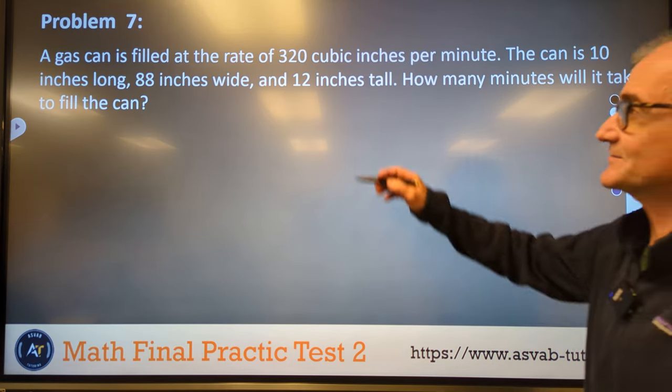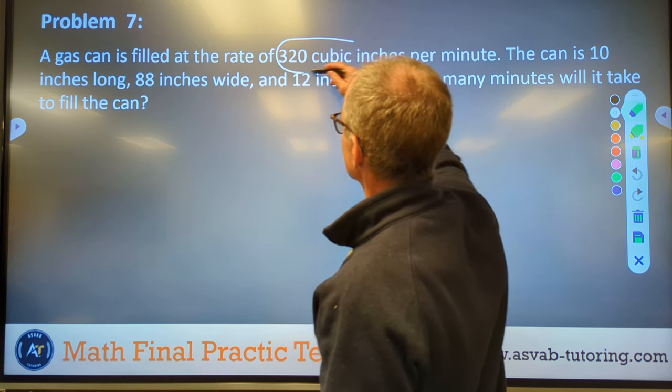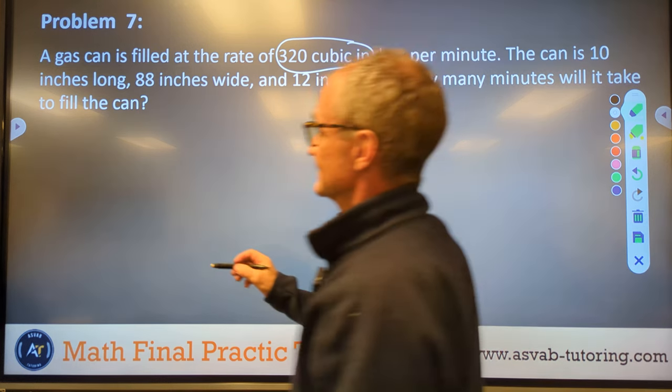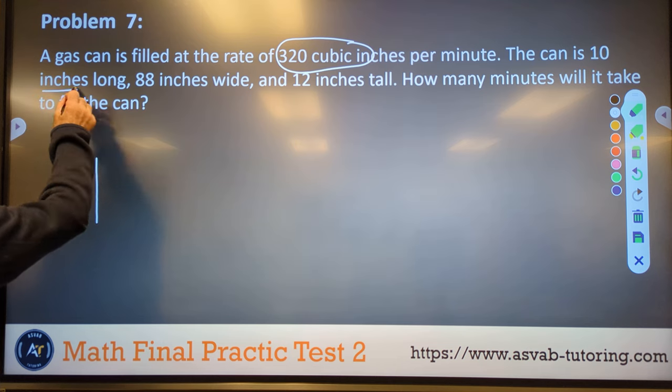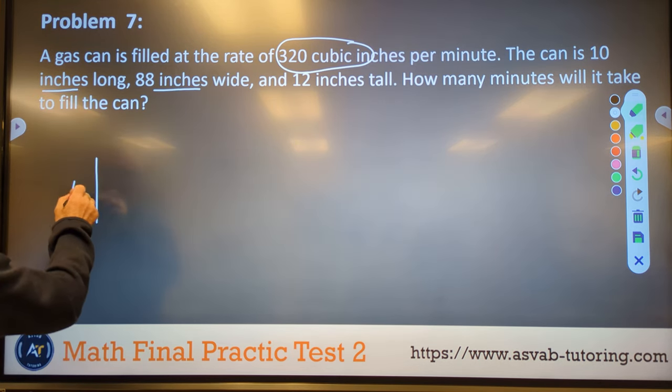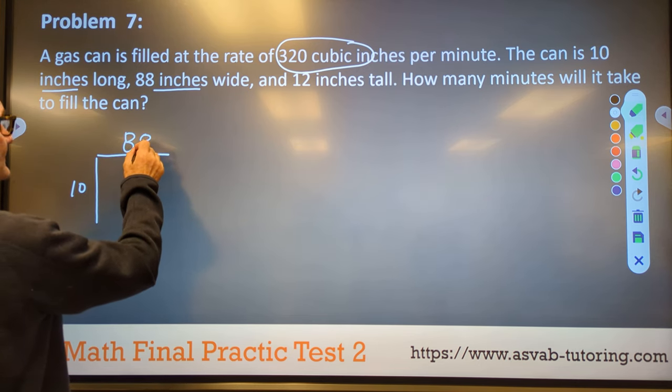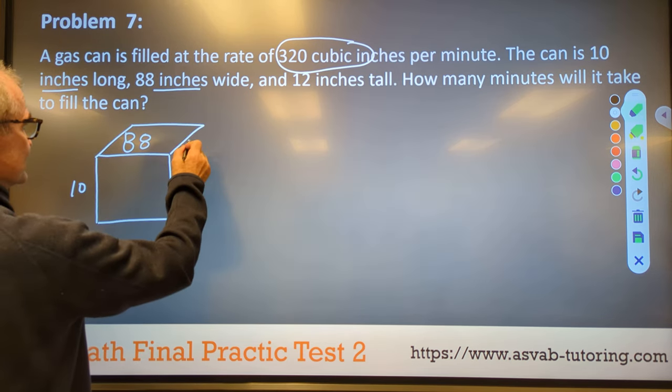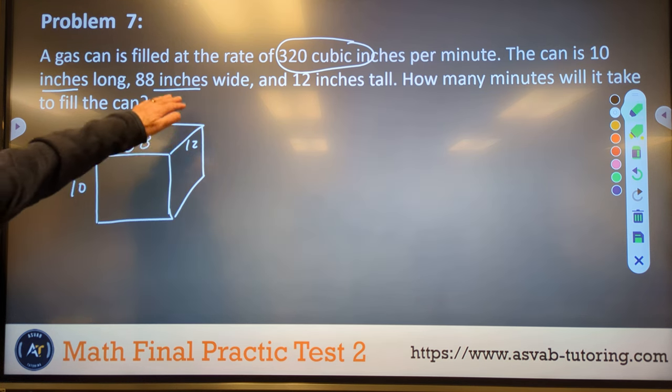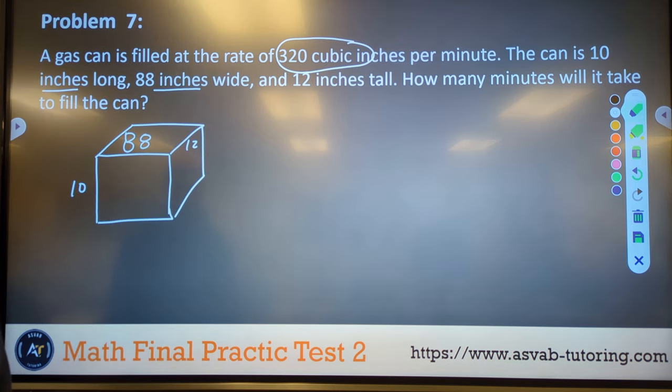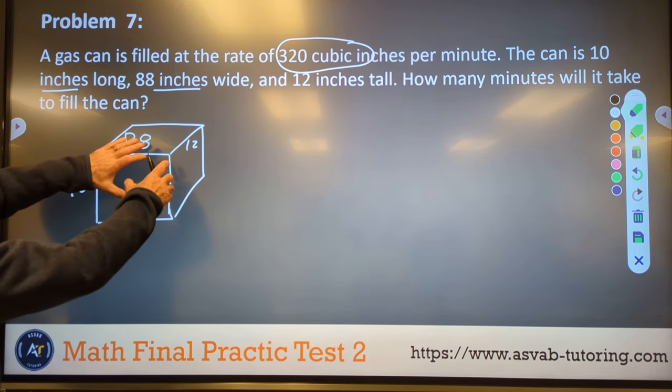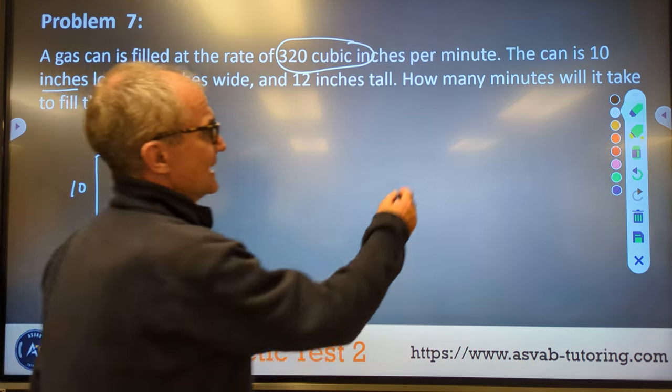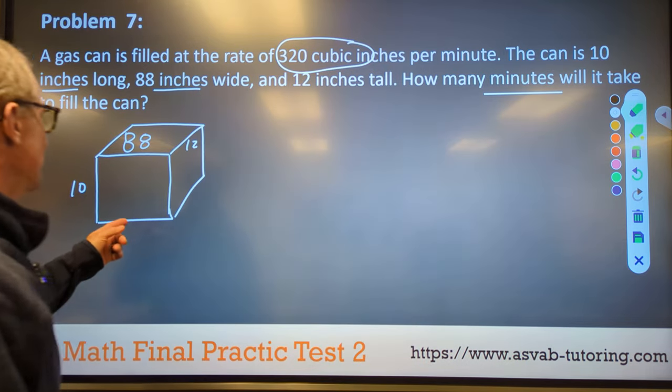Problem number seven. A gas can is filled at 320 cubic inches per minute. So that's a rate. The can is 10 inches long, 88 inches wide, by 12 inches tall. So that's going to be the volume. It's all inches. And we're filling up in cubic inches. So our units are good. So we've got to figure out how many cubic inches this is. And then it's going to go 320 inches into this every minute. And then how many minutes will it take? So let's find the volume of this first. I think I'm going to do 88 times 12 first.